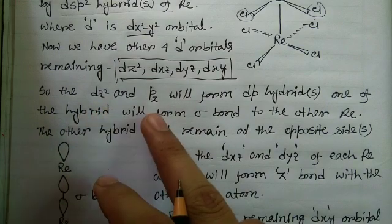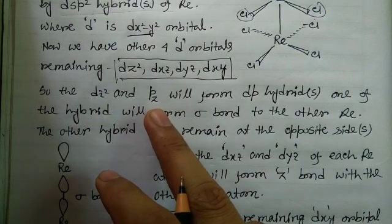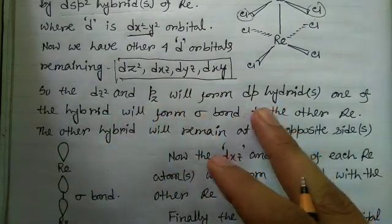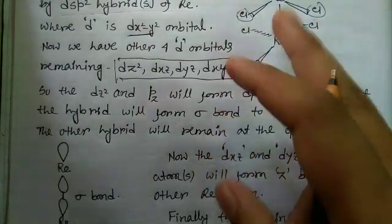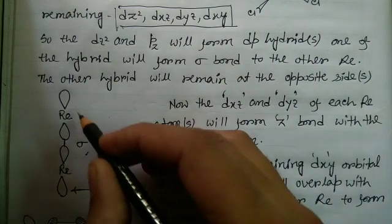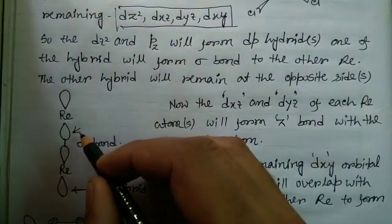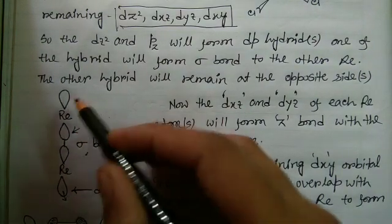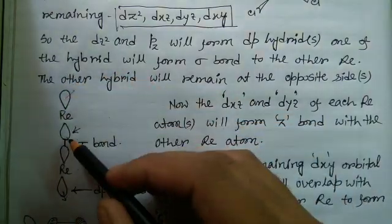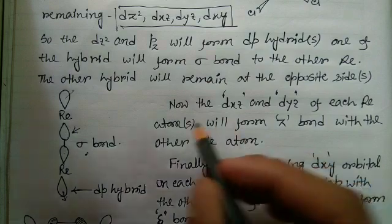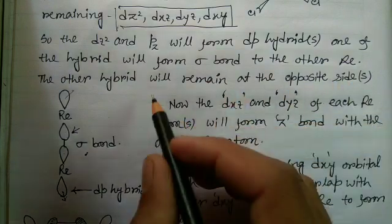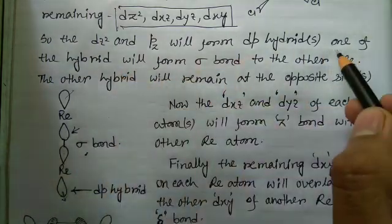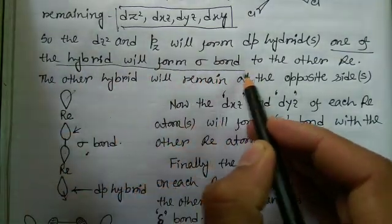The dz² and pz orbitals, which are not yet used, form a dp hybrid. One of these hybrid orbitals is used to form the rhenium-rhenium sigma bond. You can see that one lobe of the dp hybrid orbital from one rhenium and one lobe from the other rhenium overlap to form the sigma bond. The opposite lobes are not used in bonding.